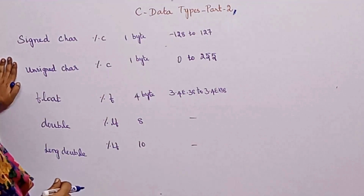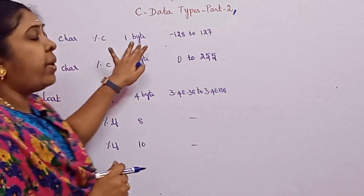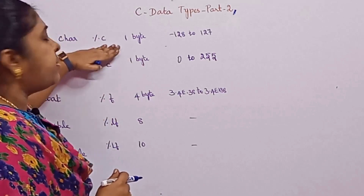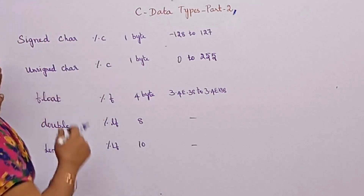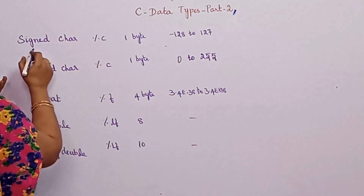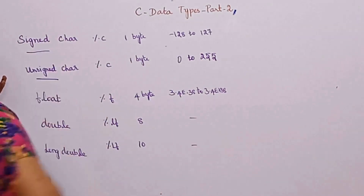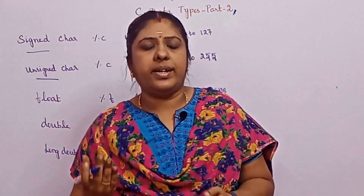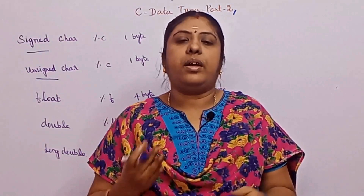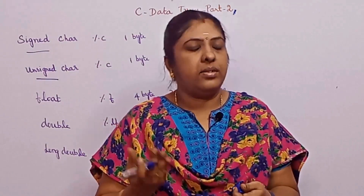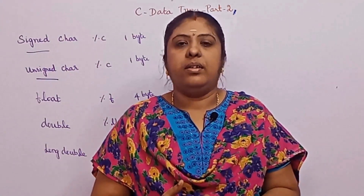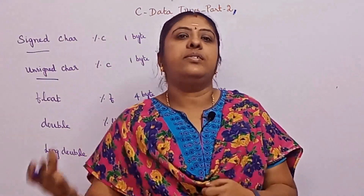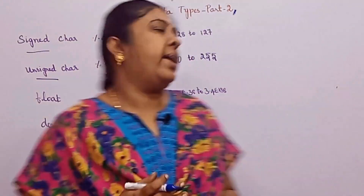The character data type always occupies one byte only and its format specifier is %c. The character has two categories: signed and unsigned. A decimal number or a float number can have only decimal numbers with signed or unsigned — so how can a character have a signed and unsigned? First we will discuss about the float, and then we will discuss about the character data type.